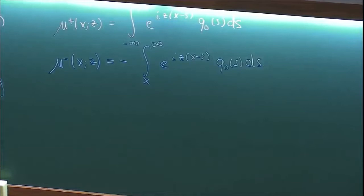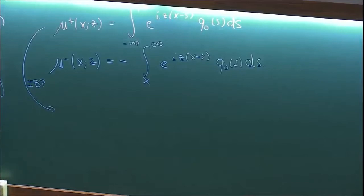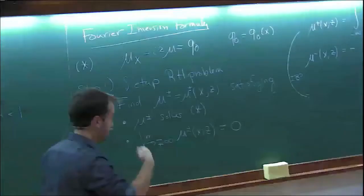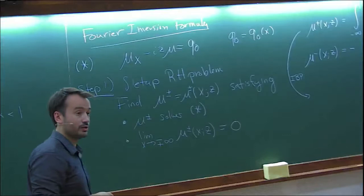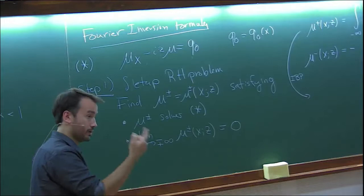Now fix x and think about what happens in z. Let me first do an integration by parts on mu plus. For large z — just as I did for the error function — I need to construct the jump condition and understand the large-z behavior. Let's do integration by parts to understand large z.